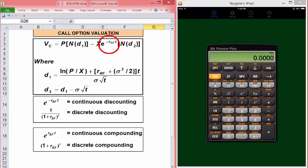E raised to the minus RT power. This is continuous discounting. We've been working pretty much with discrete discounting and compounding. The discrete form of that would be 1 divided by 1 plus R raised to the T. The minus RT makes it discounting. A positive exponent makes it compounding.